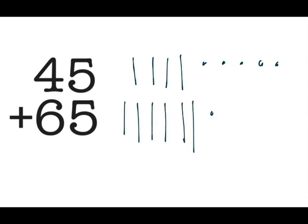The first problem I have here is 45 plus 65, and I'm going to go ahead and represent each of those numbers using the base 10 shorthand. For 65, I have six longs and five cubes. Now looking at what I have all together...